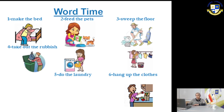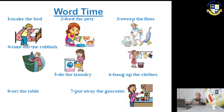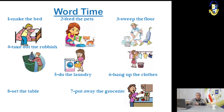Number six: hang up the clothes. Then number seven: put away the groceries. And number eight: set the table. Sorry, we have to say seven before eight — number seven: put away the groceries, then number eight: set the table.